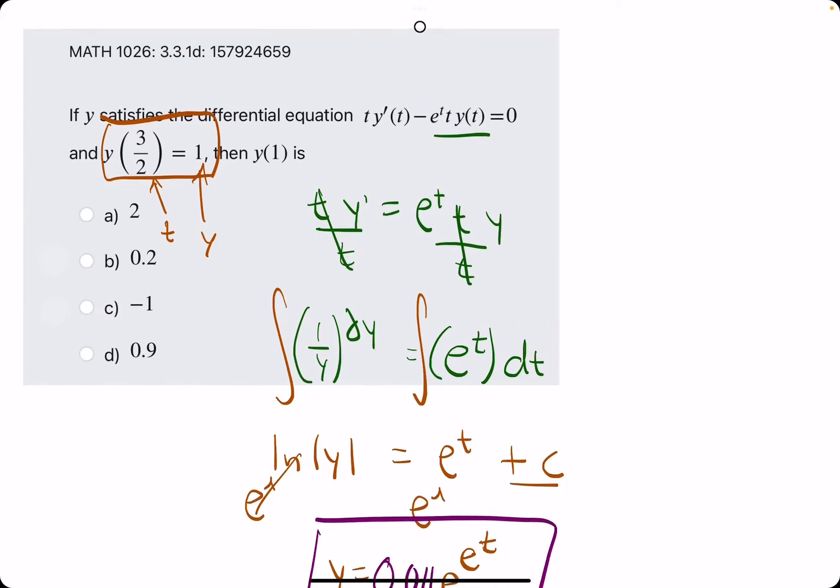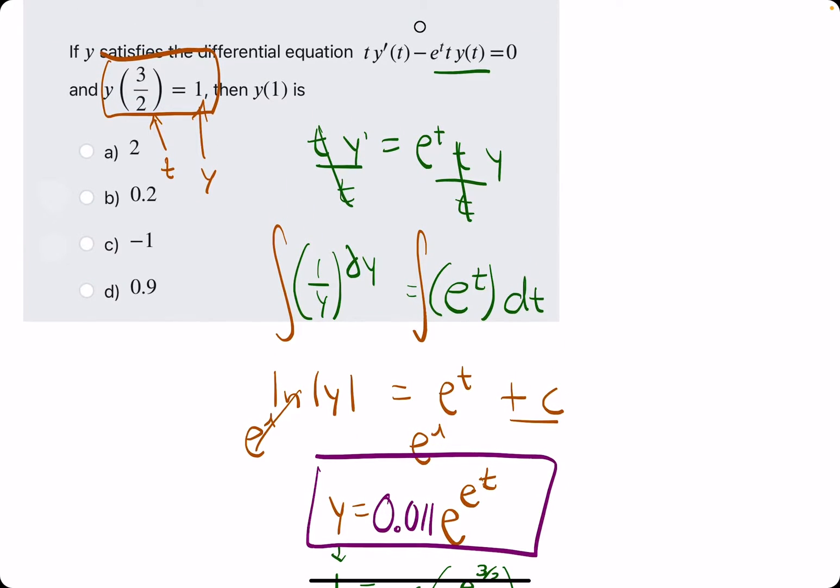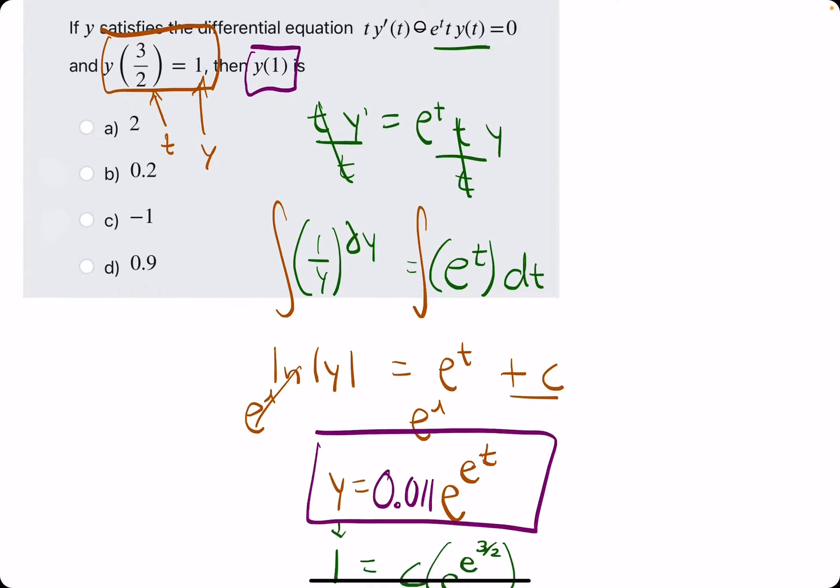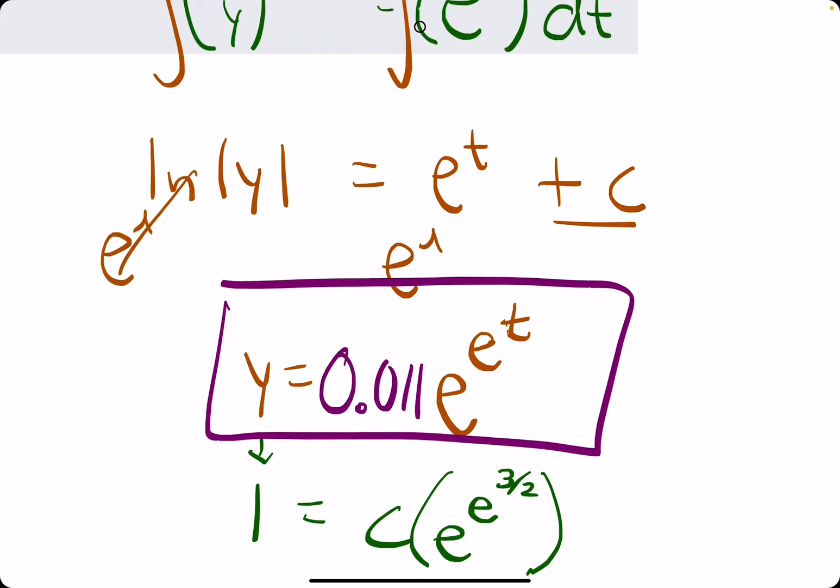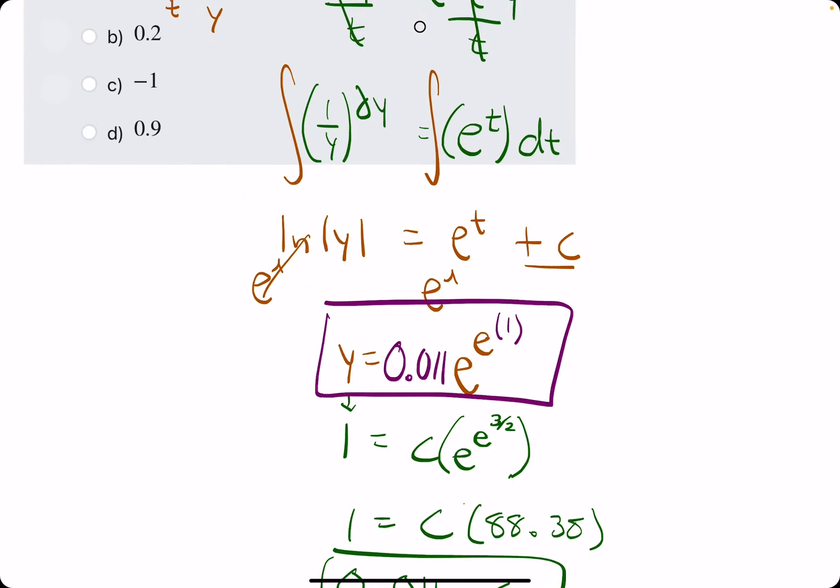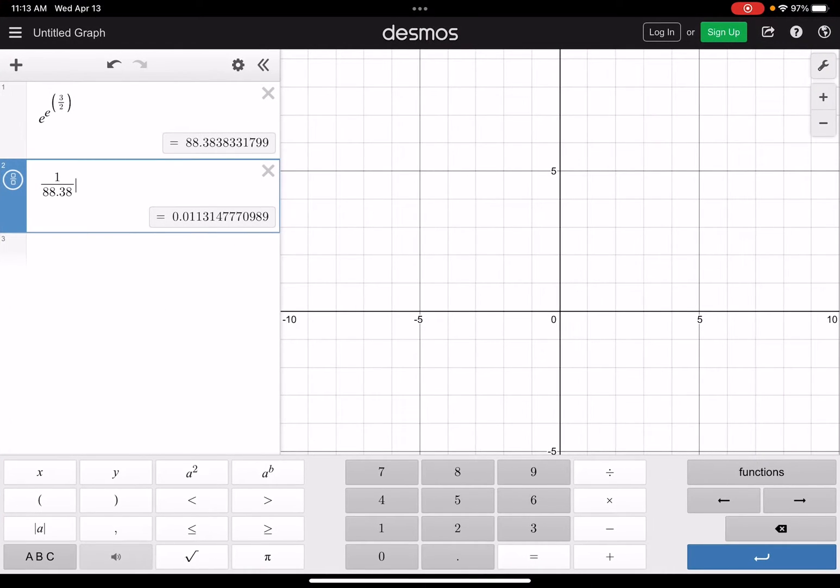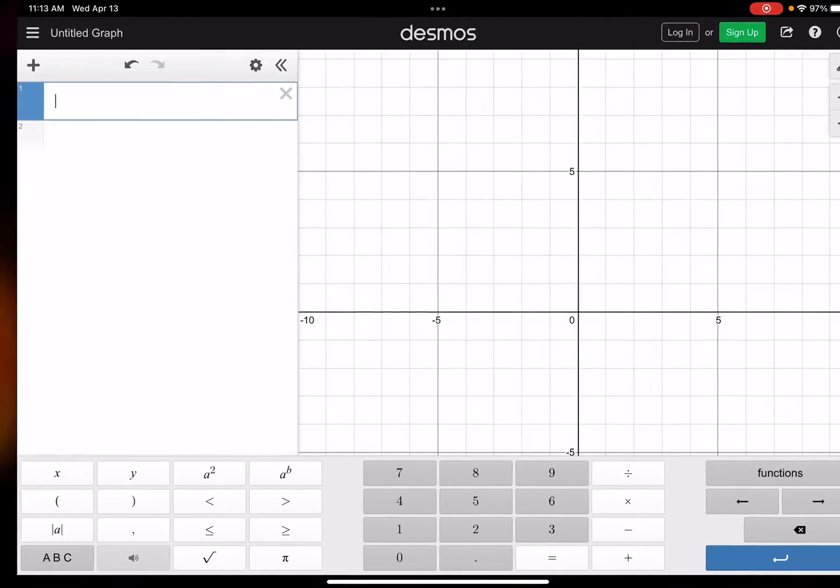Let's go ahead and plug that back in to our general function we found. All right. So we have our function y equals. So now we want to find y of 1. So we'll plug in 1 for t.